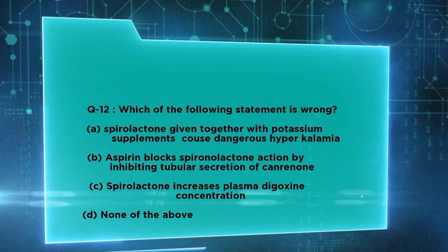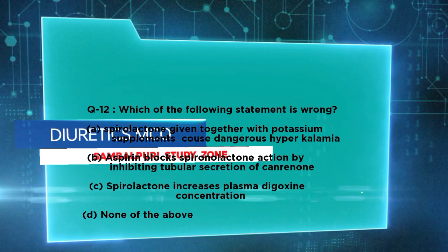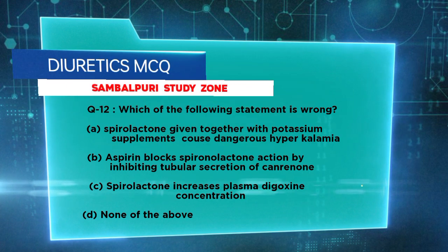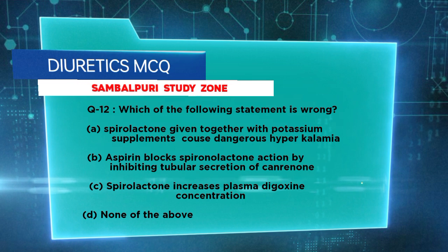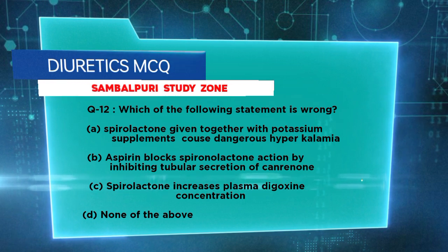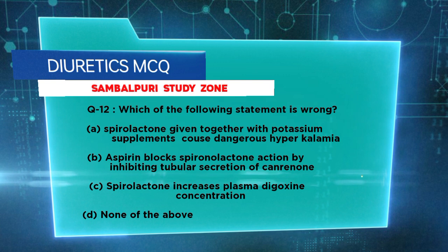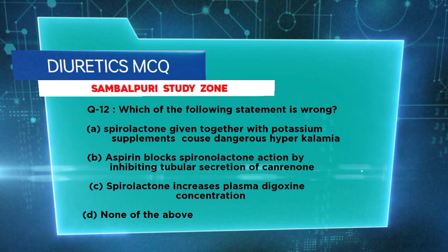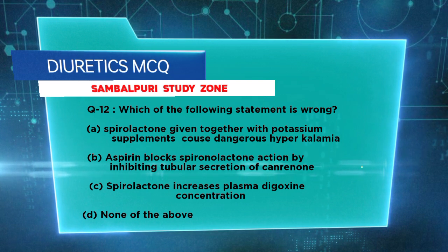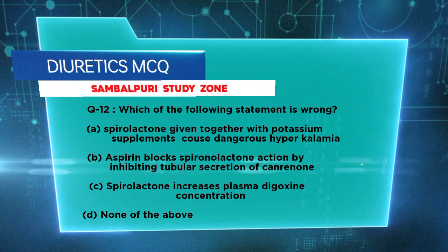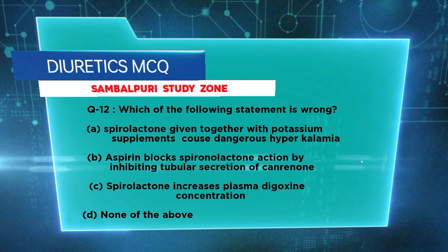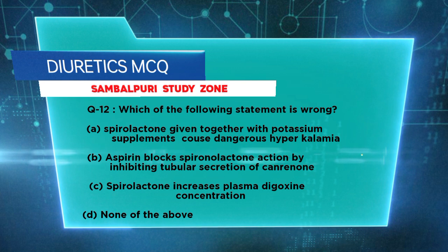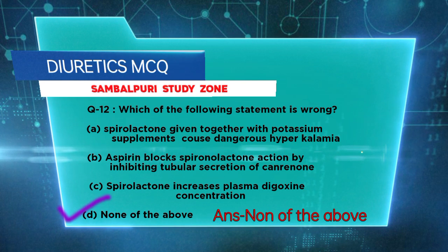Which of the following statements is wrong? A) Spironolactone given together with potassium supplement causes dangerous hyperkalemia. B) Aspirin blocks spironolactone action by inhibiting tubular secretion of canrenone. C) Spironolactone increases plasma digoxin concentration. D) None of the above. The right answer is none of the above.